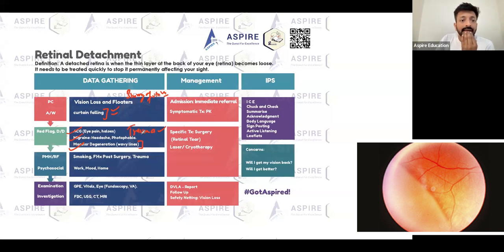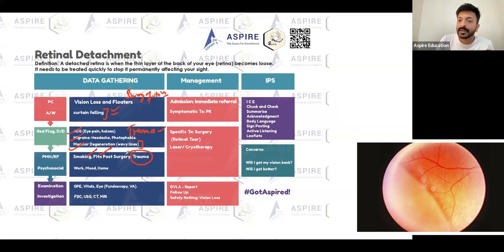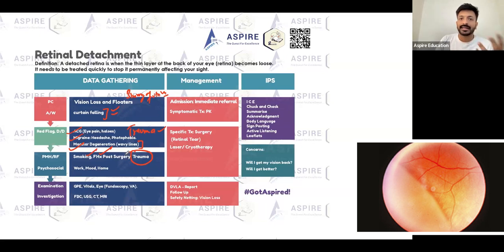What else? You should ask about risk factors. Once you've covered the presenting complaint, associated symptoms, and ruled out differentials, move on to risk factors. Smoking is a risk factor. Family history is really, really important. Post-surgery — particularly cataract surgery — is very common as a preceding factor for retinal detachment. Trauma history is also very important. And if the patient has high myopia, that could also be a reason for retinal detachment.